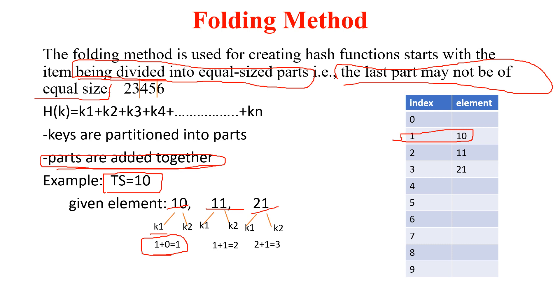Next is 11. If we partition 11 into equal size, we will get K1 equals 1 and K2 equals 1. If we sum it, 1 plus 1, you will get 2. It means that 11 is going to store at second index.